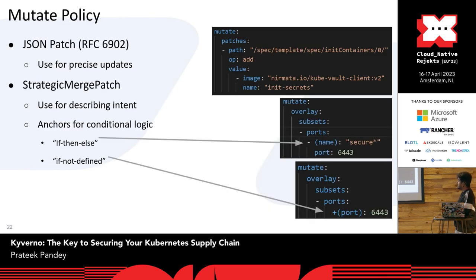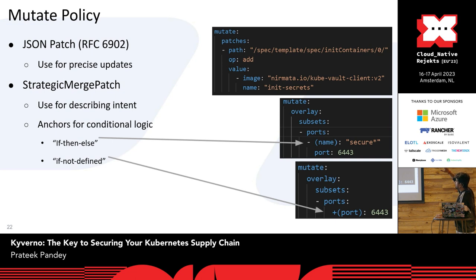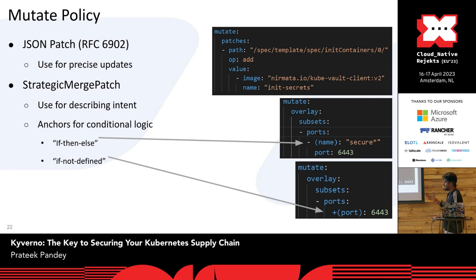A mutate policy example: I have a mutate rule. Similar to validate, I'm creating a patch — ranging over all containers and doing an add operation. It can patch all containers: init containers, ephemeral containers, or the main container. It can do port patching and supports different condition logic or anchors using if/then/else. It uses JSON patch and strategic merge patch to patch resources.